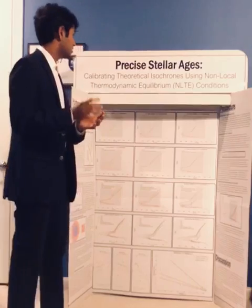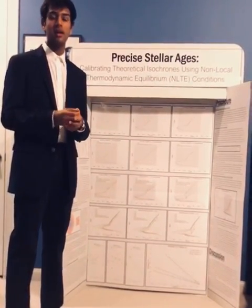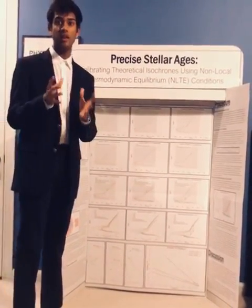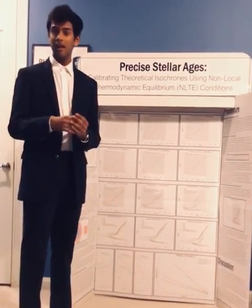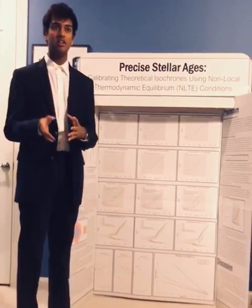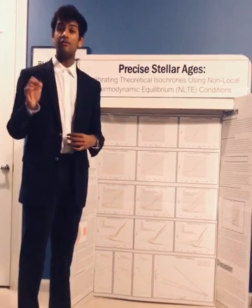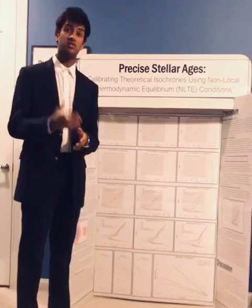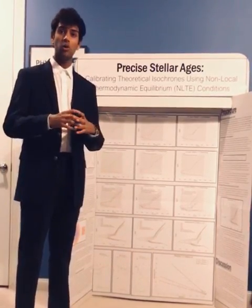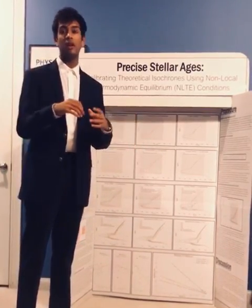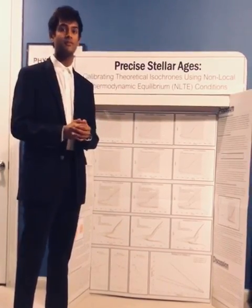These isochrones are based on the temperature of stars — thermodynamic models of stars. The thermodynamic models we currently use to construct isochrones are known as LTE. LTE models are fairly computationally complex, but all you need to know is that they are very good models for dense stars like our sun. But how about for less dense stars? Our older stars are much more massive and have their layers spread out over a larger distance, making them less dense.